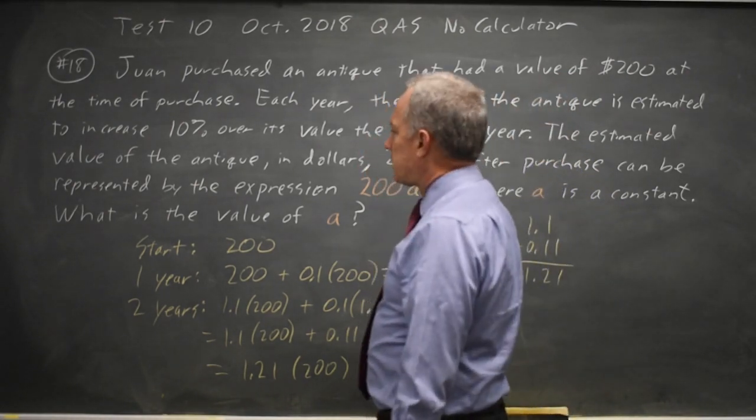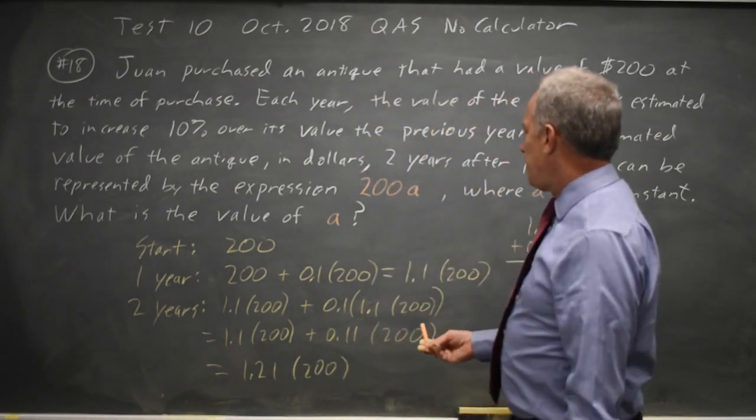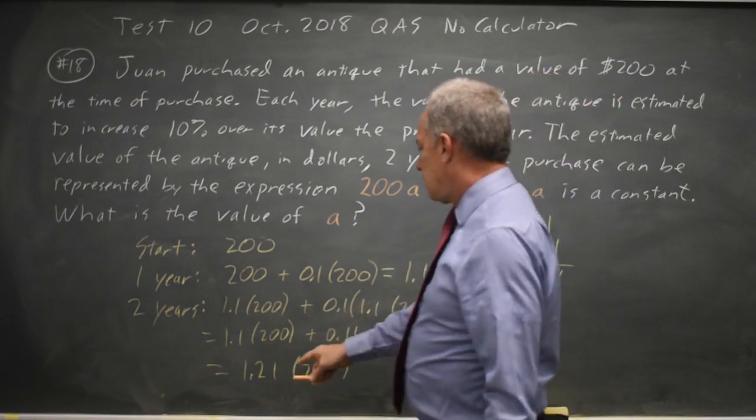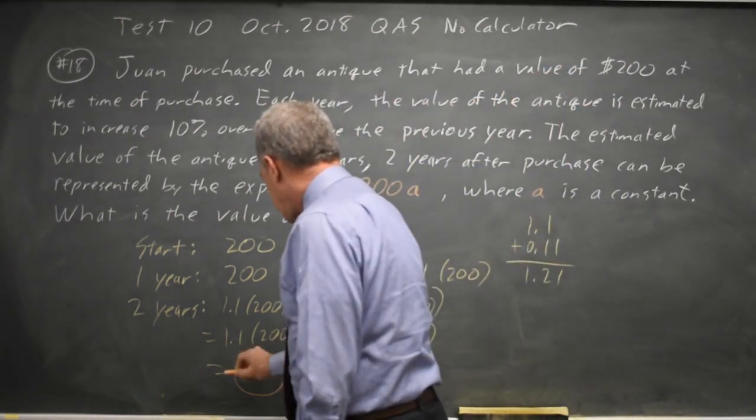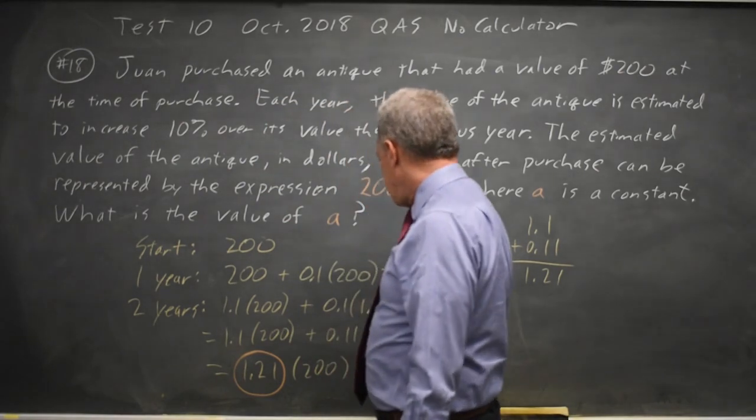And the question asks for the value of A if the value after two years is 200A. The value after two years is 1.21 times 200, so 1.21 equals A.